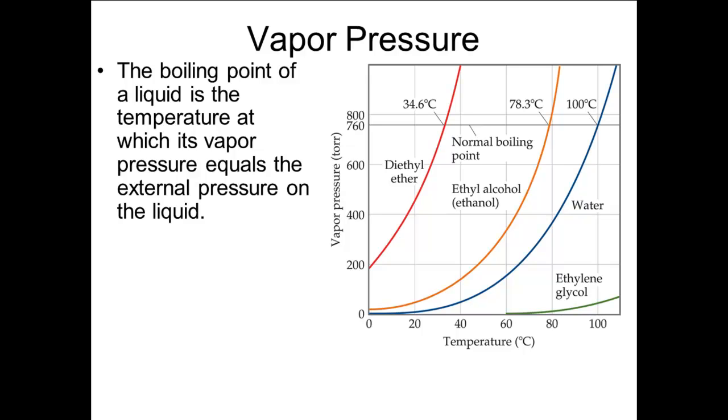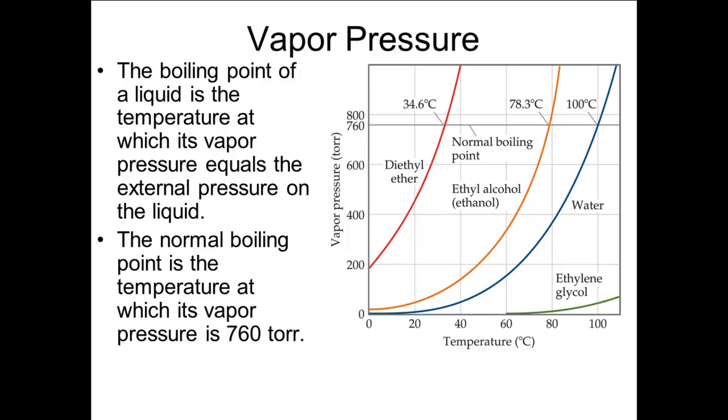The boiling point of a liquid is a temperature at which the vapor pressure of the liquid is equal to the external pressure on the substance. The normal boiling point is a temperature at which the vapor pressure of the liquid equals one atmosphere.